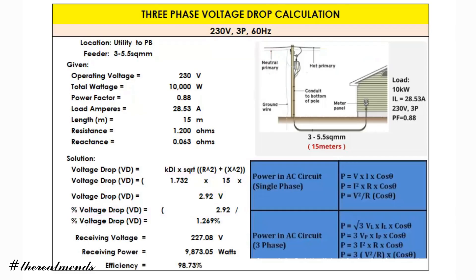If you want to get the receiving voltage at the end — at the meter panel — just subtract 230 volts by 2.92, giving us 227.08 volts. To get the receiving power, we use the power formula. In AC circuits for single phase, power equals voltage times current times cosine theta.